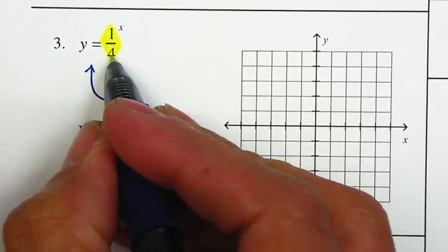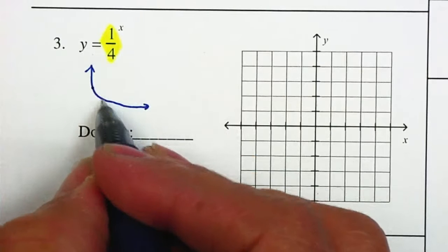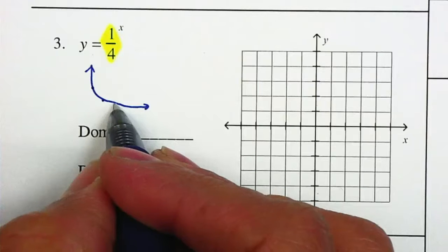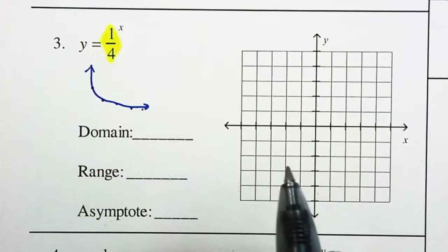Because as you multiply 1 fourth by itself, it gets smaller: 1 fourth, 1 sixteenth, 1 sixty-fourth, and so on. The numbers get smaller and smaller and smaller.